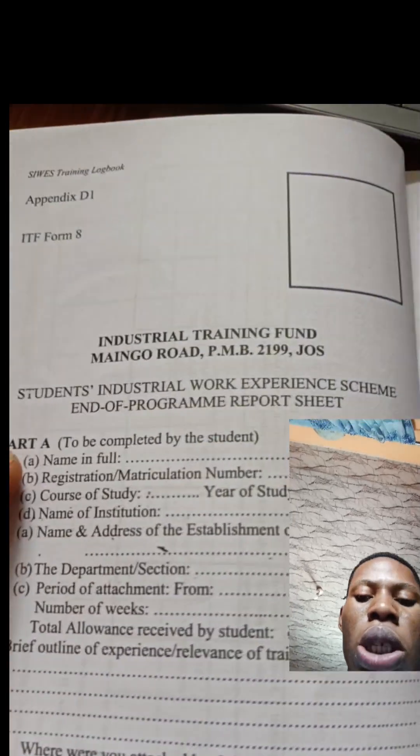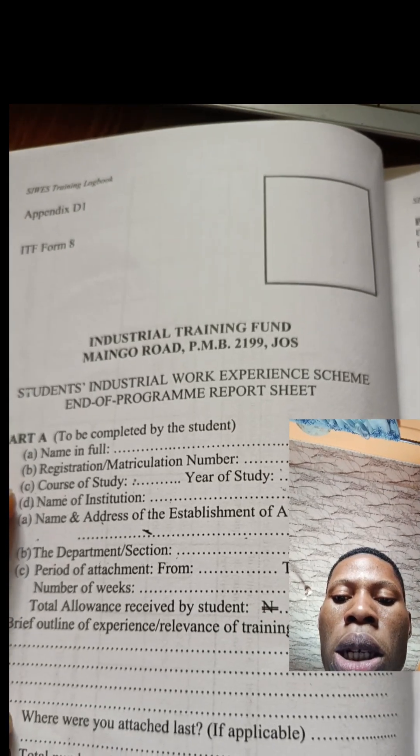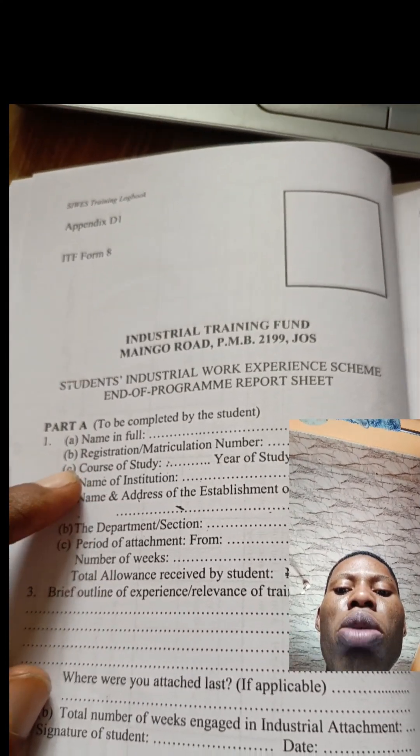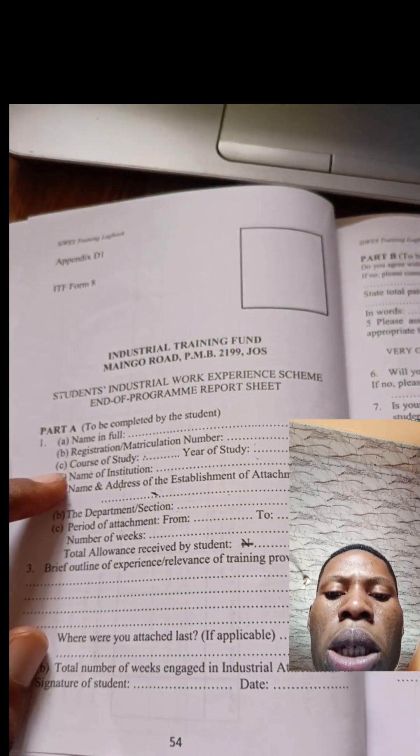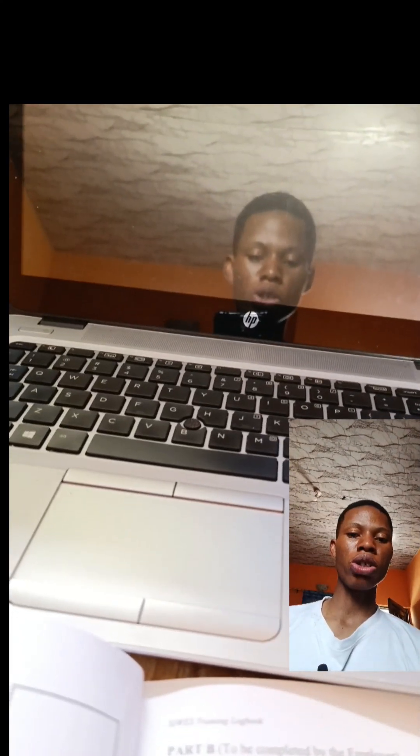Part A asks for: name in full - write your full name; registration number - write your matric number; course of study - write your course; year of study - what level are you; name of institution - write the name of your university; name and address of the establishment of attachment - write the place where you're doing your IT. Then the department section - what department are you doing your IT in at that organization? For example, if you're doing your IT in a hospital, what department of the hospital? If it's the lab, write 'Laboratory Unit.'